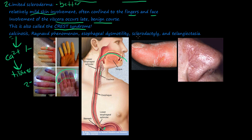S stands for sclerodactyly. Dactyly refers to the fingers or digits, and sclero refers to hardening. The tissue hardens and gets very tight, causing you to lose mobility in the joints because the skin gets so tight and hard, and you can also develop ulcers.